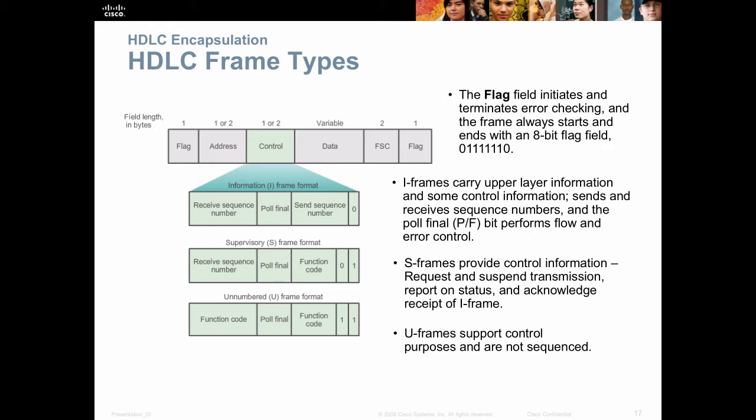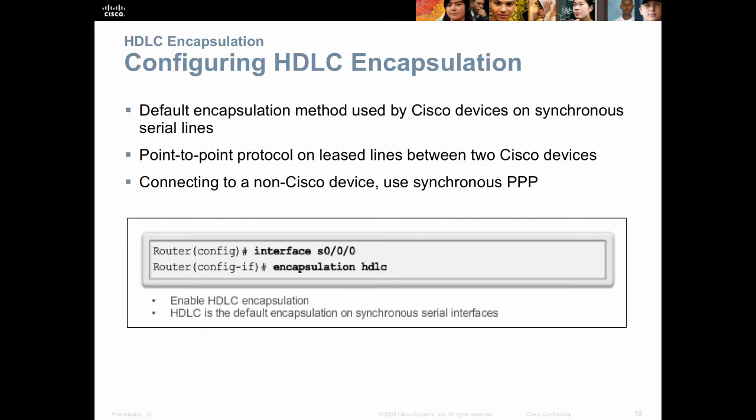Configuring HDLC is super easy — go into the serial port and type 'encapsulation HDLC.' You're done. However, if you want to connect to non-Cisco devices or use features like encryption, authentication, load balancing, or anything advanced, you can't do it with HDLC. It was designed as a very simple example of what a Layer 2 protocol should be. It is the default on all Cisco serial ports, but we may want to change it to PPP. PPP is well-defined and multi-vendor, so you can interconnect any brand of device that supports the PPP protocol.